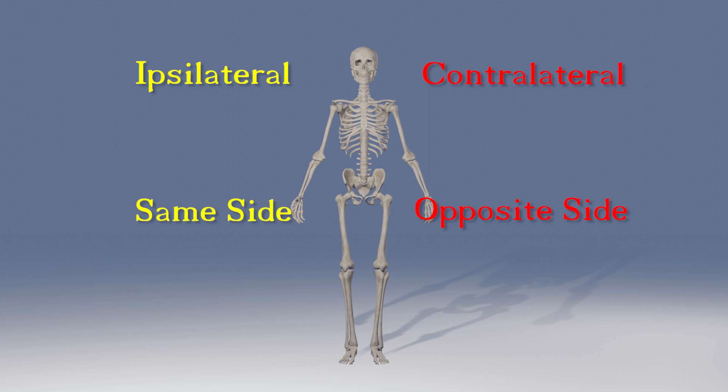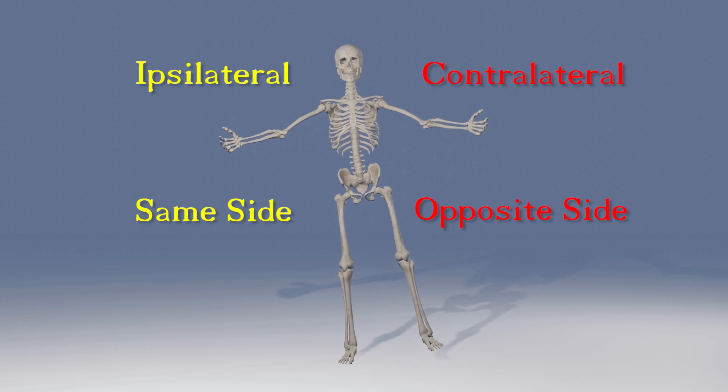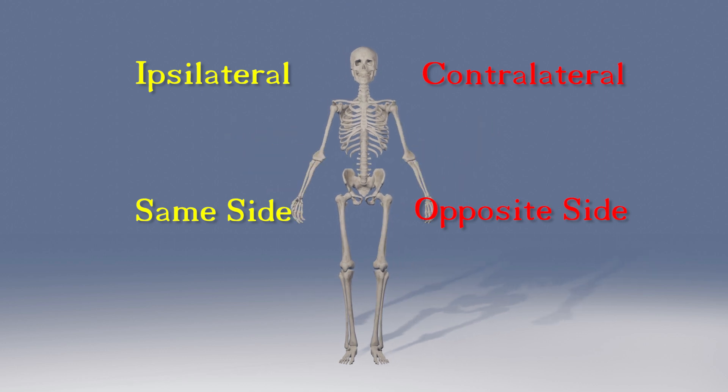Contralateral. Contra means opposite. If something is on the contralateral side, it is on the opposite side. If I say something contrary to what you said, I'm disagreeing with you and taking the opposite side. The right arm is contralateral to the left arm. The right arm is also contralateral to the left leg or foot or shoulder. The opposite of contralateral is ipsilateral. The right arm is ipsilateral to the right foot and contralateral to the left foot.